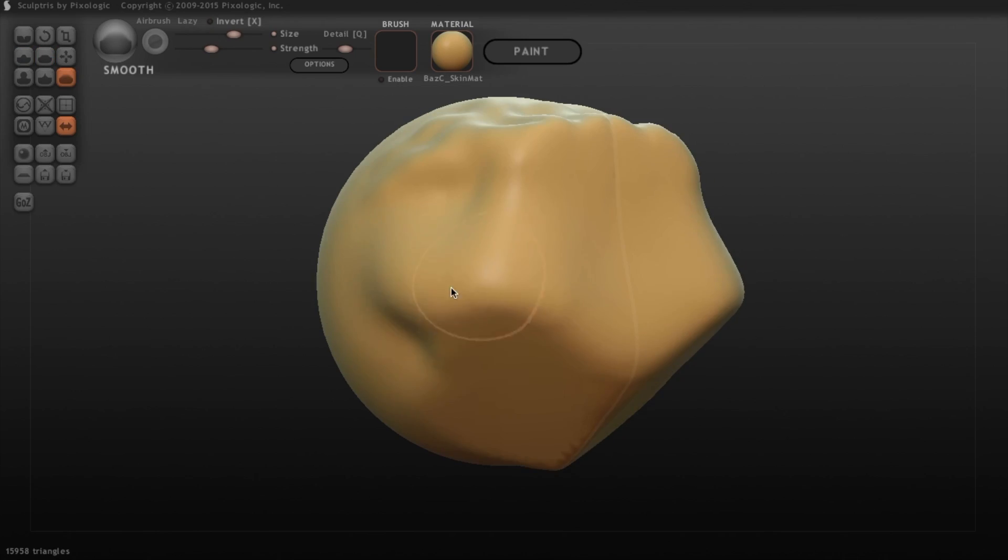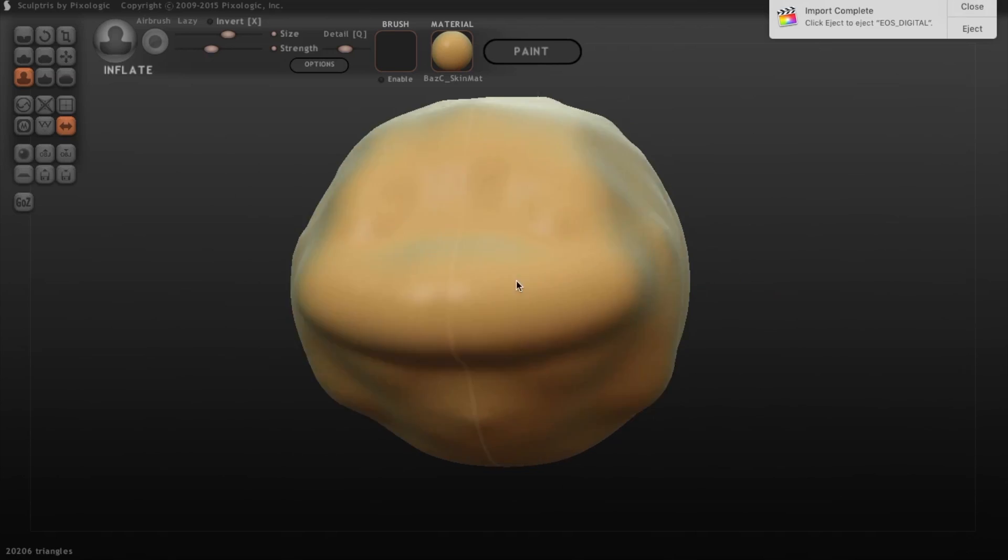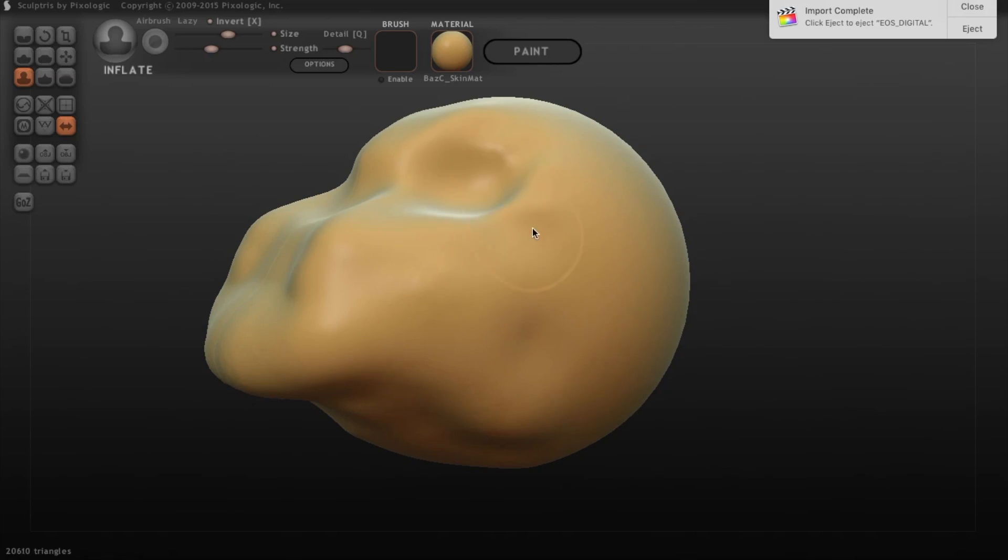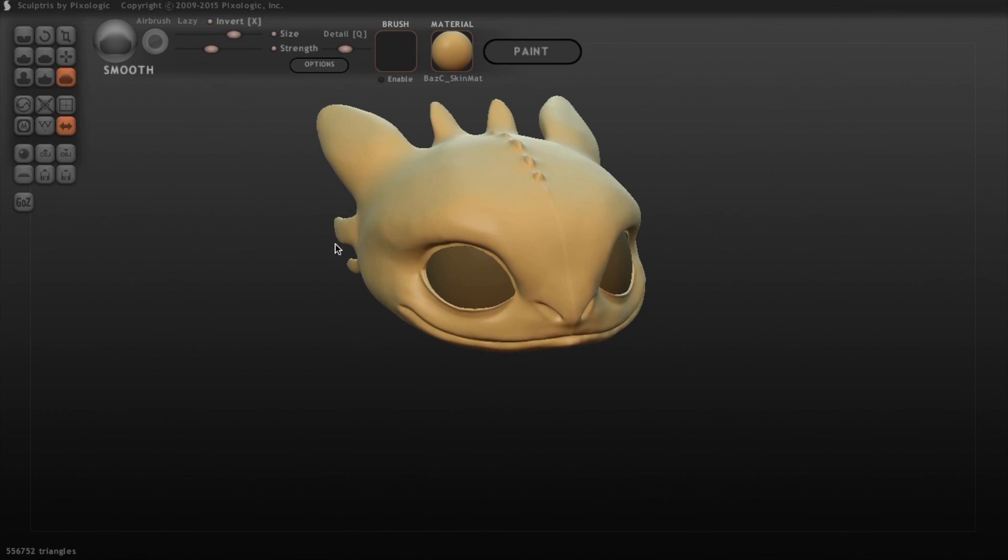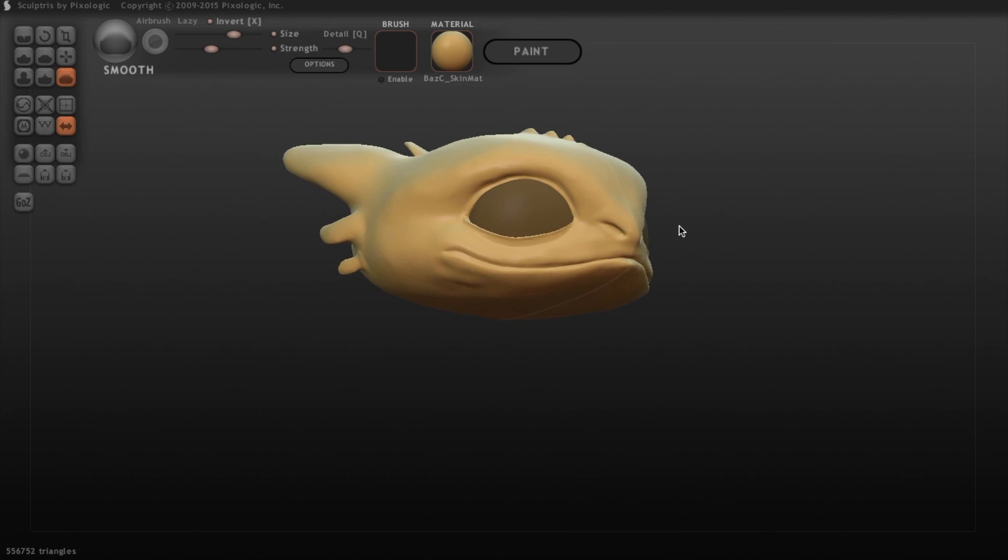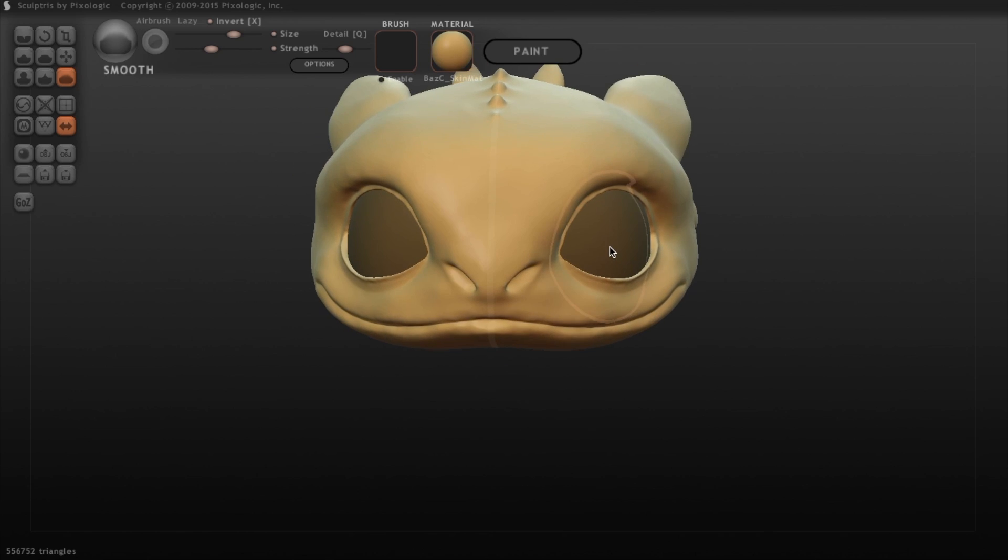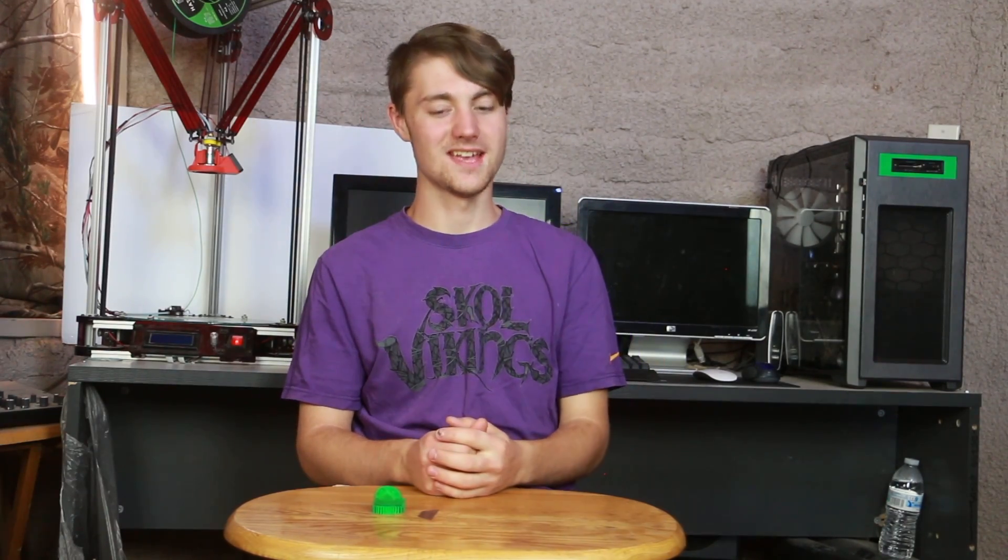I've never sculpted anything before. I ended up using Sculptris and a little bit of this and that, and finally got something reasonable that looked like a dragon head. I consider this guy a little mini Toothless from How to Train Your Dragon. So let's go ahead and get right over to the printer and start printing this thing.